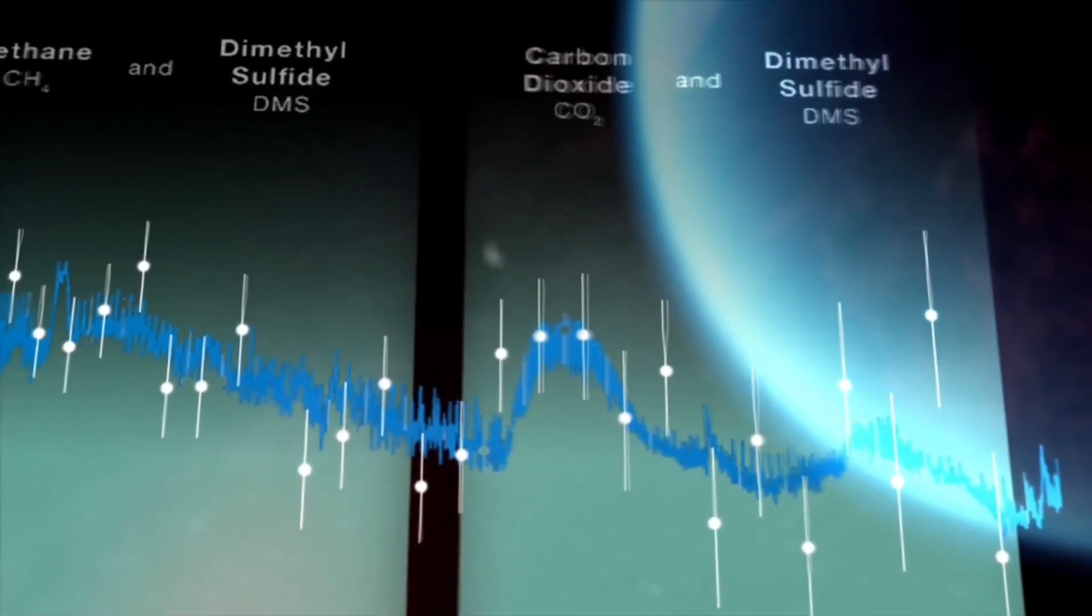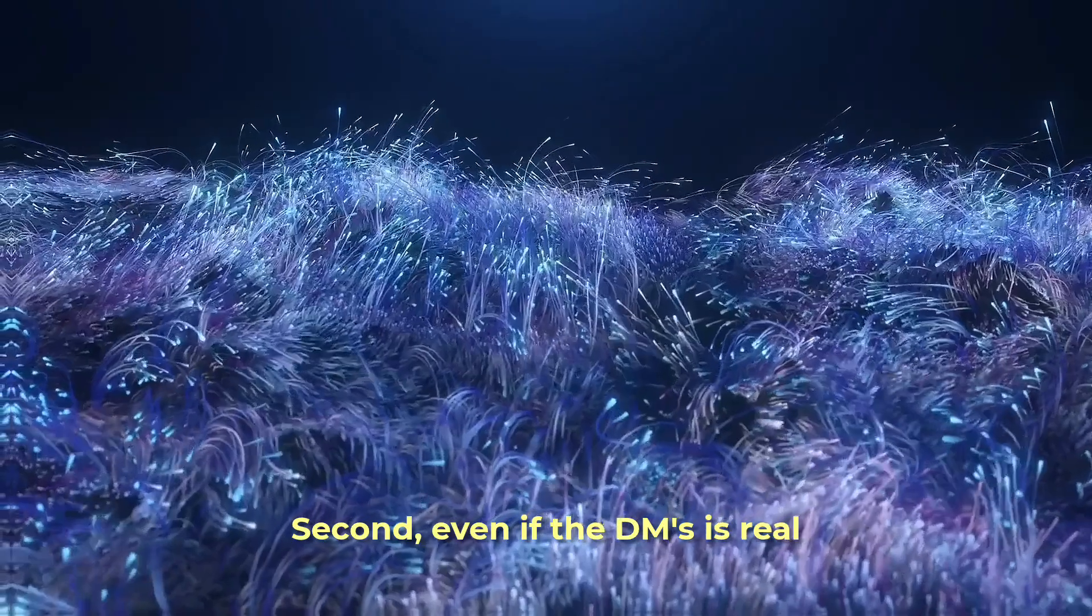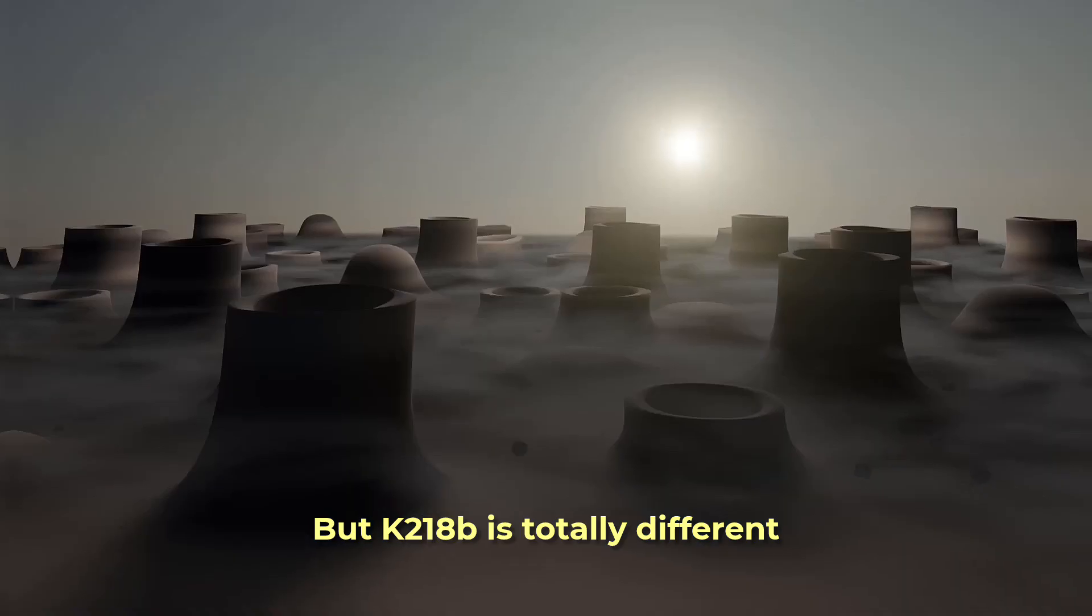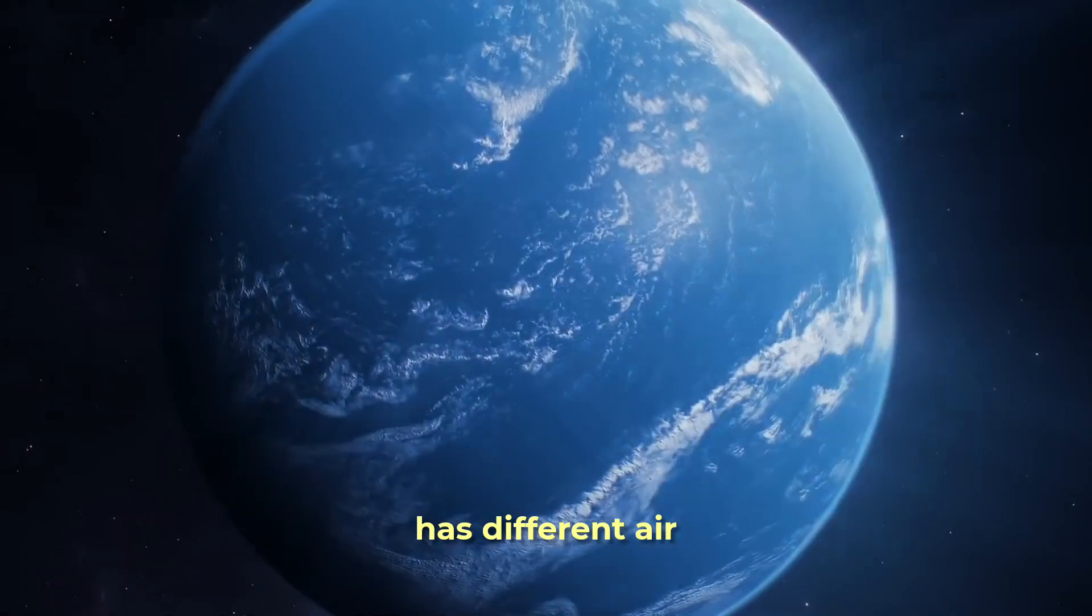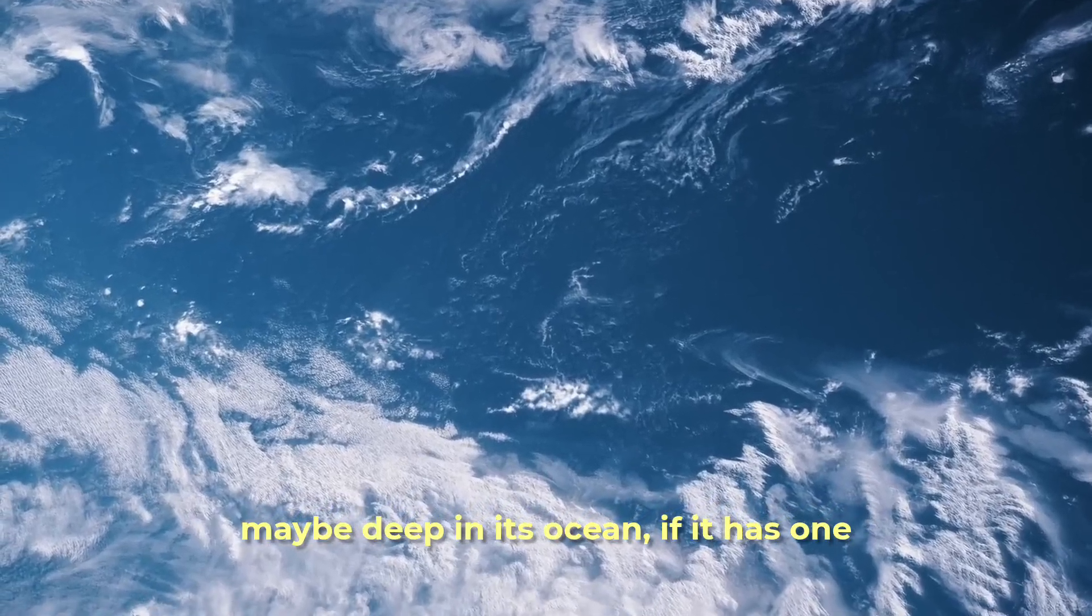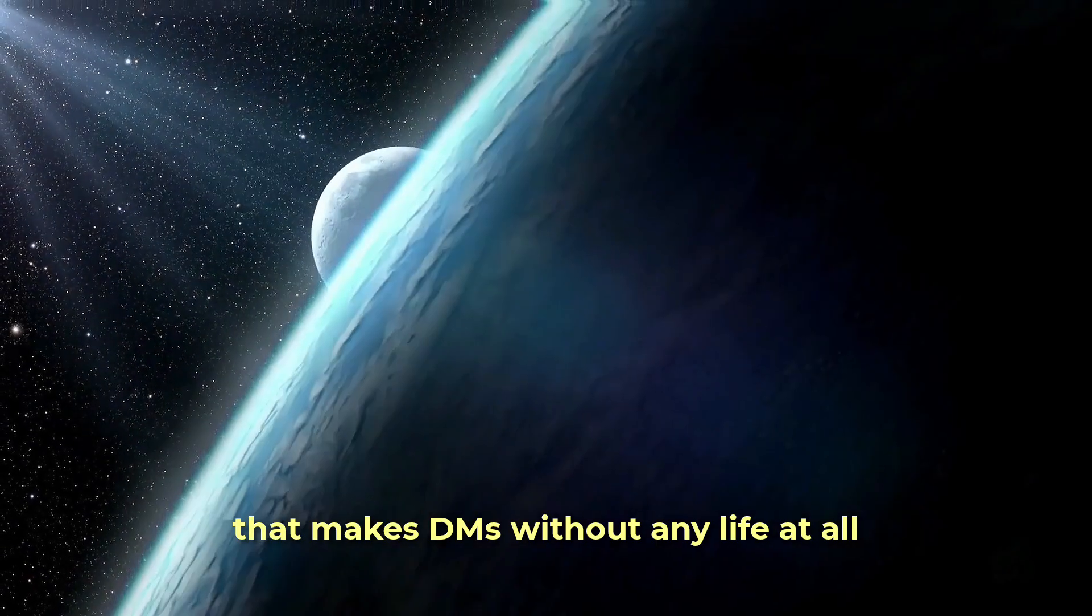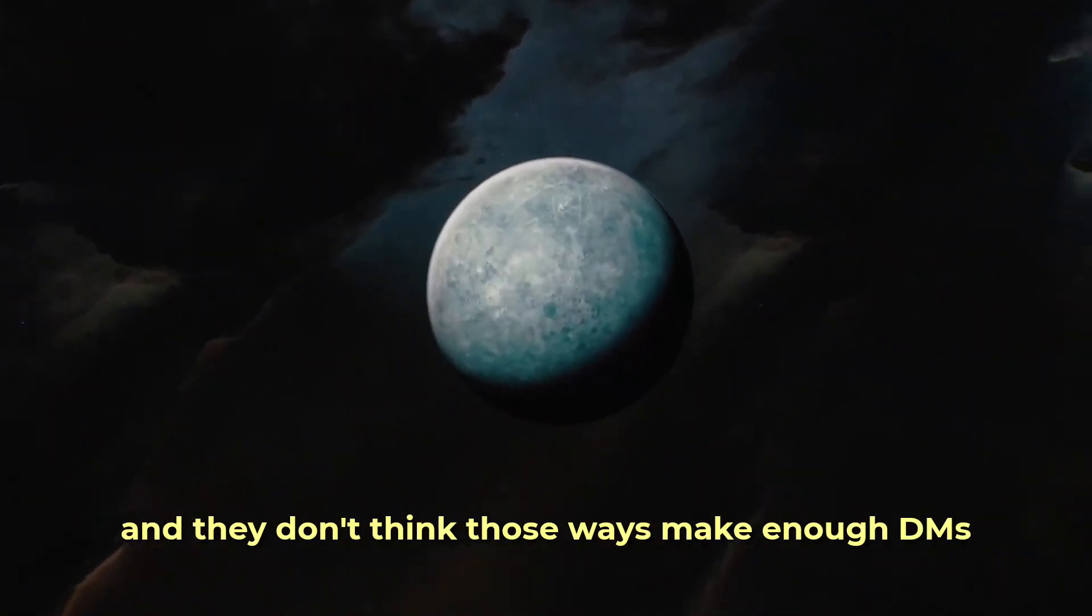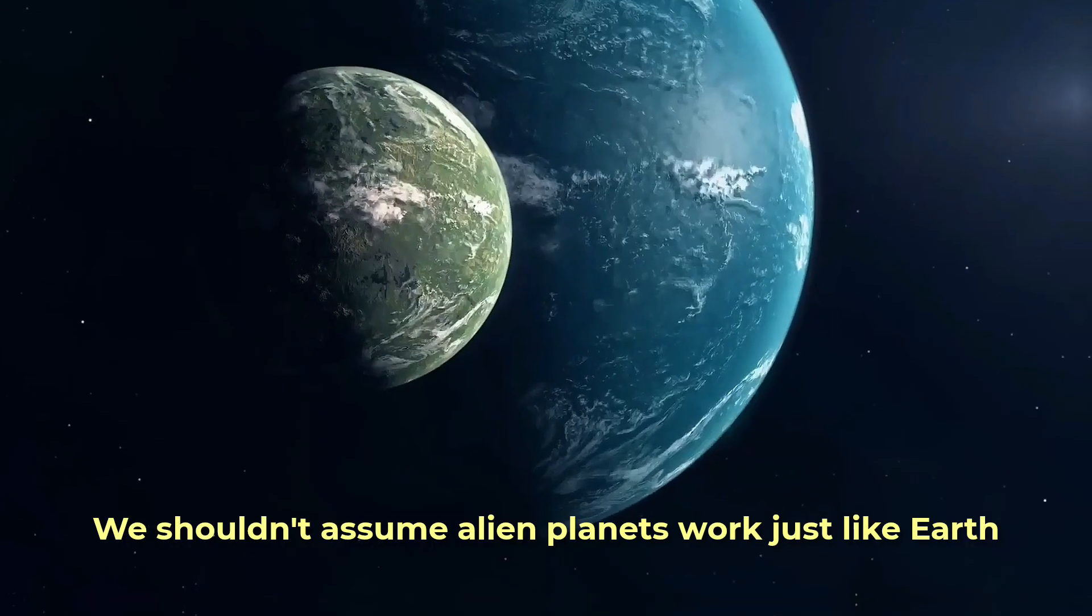Big question number one: Is the signal even real or just lucky static? They need more proof. Second, even if the DMS is real, does it have to be life? We know life makes DMS here on Earth, but K2-18b is totally different. It's huge, maybe has crazy high pressure deep down, has different air, and circles a different kind of star. Could there be some weird chemistry happening there? Maybe deep in its ocean, if it has one, or high in its air, zapped by the star's rays, that makes DMS without any life at all? Scientists have thought about known ways this could happen, and they don't think those ways make enough DMS. But what about ways we don't know about yet? We shouldn't assume alien planets work just like Earth.